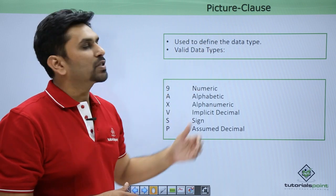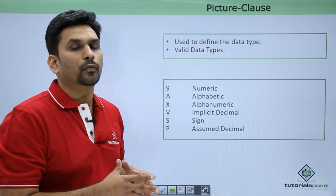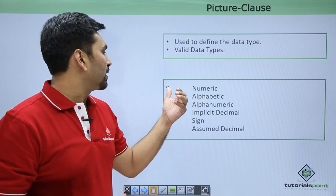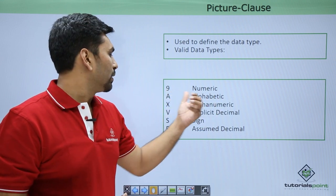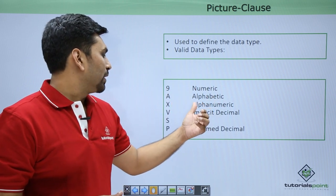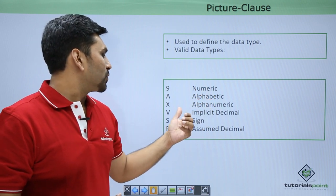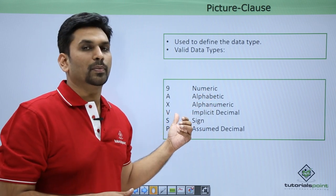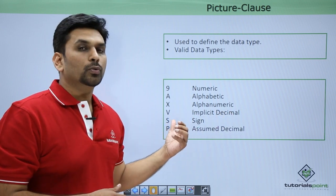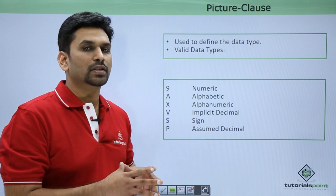Picture clause is used to define the data type — what data you want to store in the variable. It can be 9 for numeric, A for alphabetic, and X for alphanumeric. In alphanumeric you can have both numeric and alphabetic data. Suppose if you want to show a decimal in the output, you can use V for implicit decimal. Then if you want to show sign as well, S is for sign — it will indicate positive as well as negative.